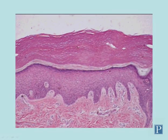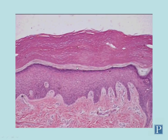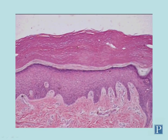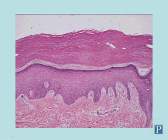Superficial to the stratum granulosum is the translucent, fairly clear stratum lucidum — 'lucidum' meaning lucid or clear. The stratum lucidum is only visible in thick skin; if you see this distinctive layer, you're looking at thick skin. Finally, superficial to the stratum lucidum is the thick stratum corneum layer. Like the stratum lucidum, these cells are dead and lack visible nuclei — they are basically dead cellular husks impregnated with large amounts of keratin.